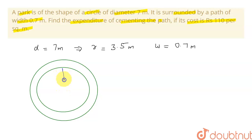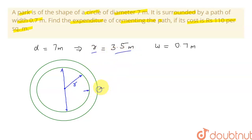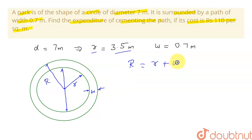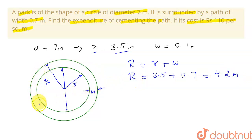The diameter of the inner circle is 7 meters, so the inner radius, small r, is 3.5 meters. The width of the track w is 0.7 meters. The outer radius, capital R, equals small r plus the width: 3.5 plus 0.7, which gives us 4.2 meters.